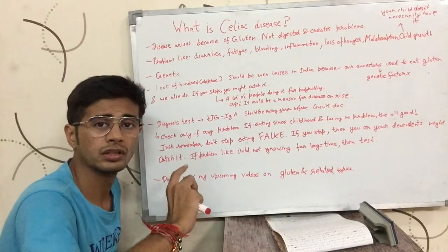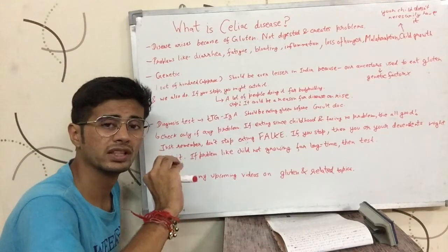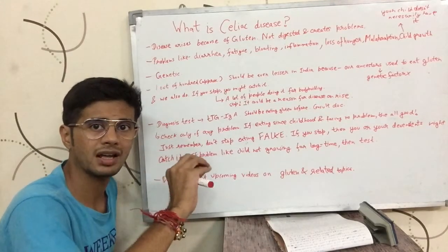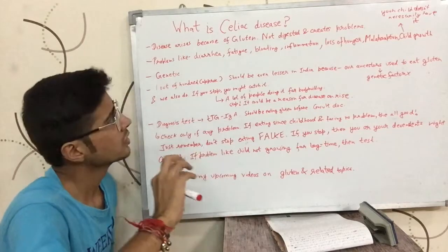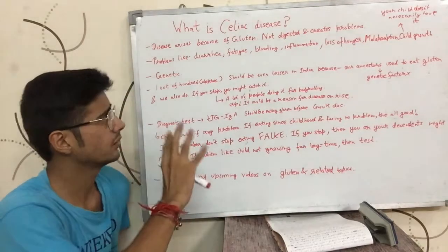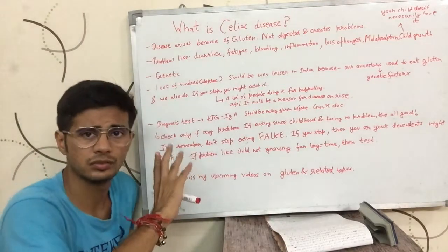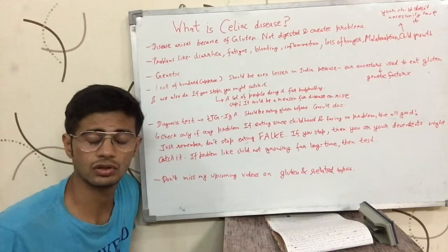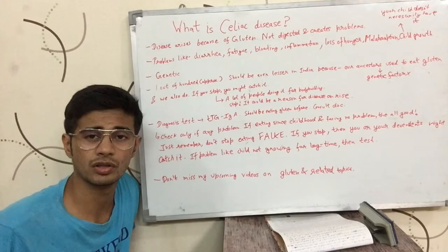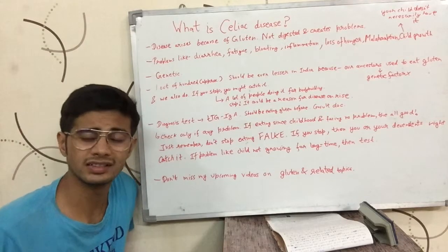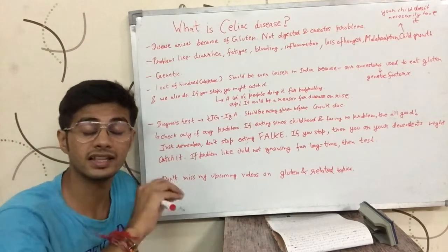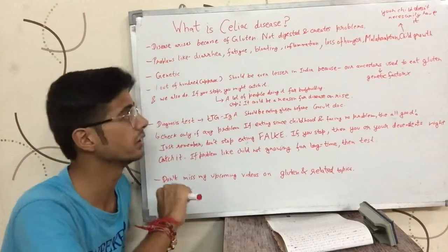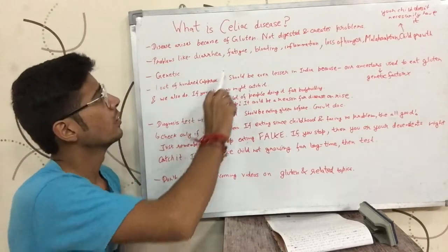Gluten is a protein found in wheat, barley, and rye. For Indians, we are going to be talking about wheat and barley because rye is a crop mostly grown in foreign countries.